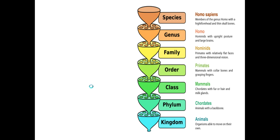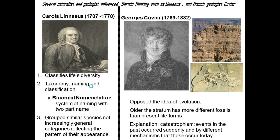For example, for us humans: we are under animals, we're chordates, in the class of mammals, order of primates, family of hominidae, genus Homo, species Homo sapiens. This naming system was first developed by Carolus Linnaeus, who classified life's diversity by appearances. The science of naming things is called taxonomy, and he came up with a system of two-part names called binomial nomenclature, grouping species based on physical appearance and category.